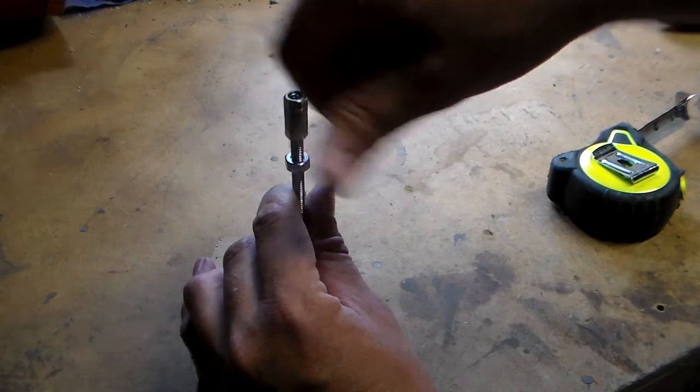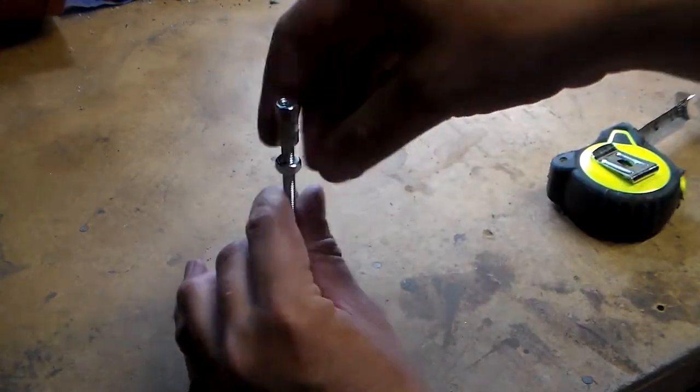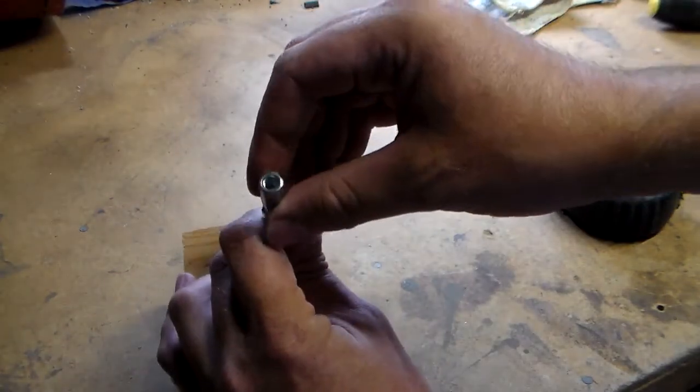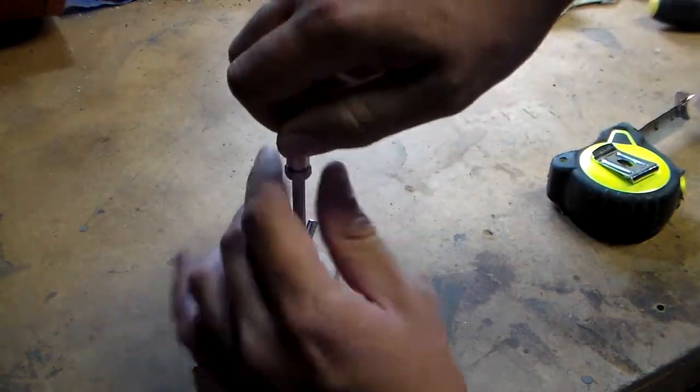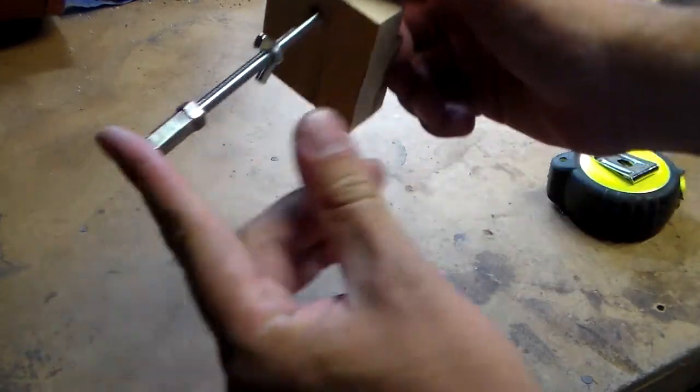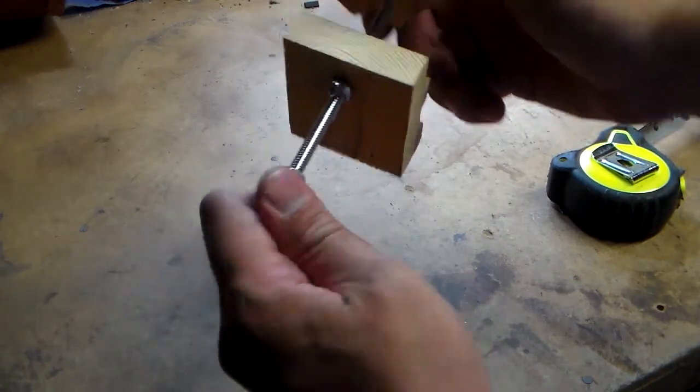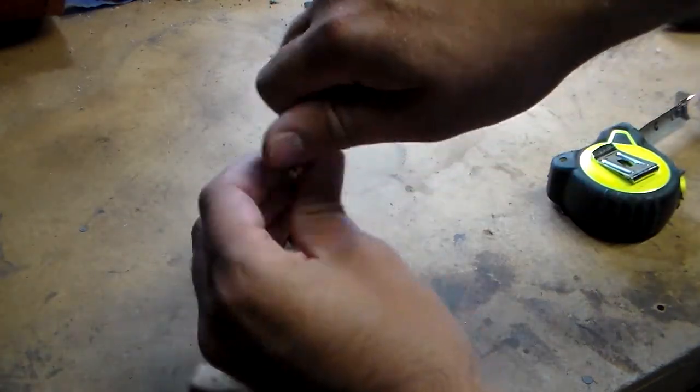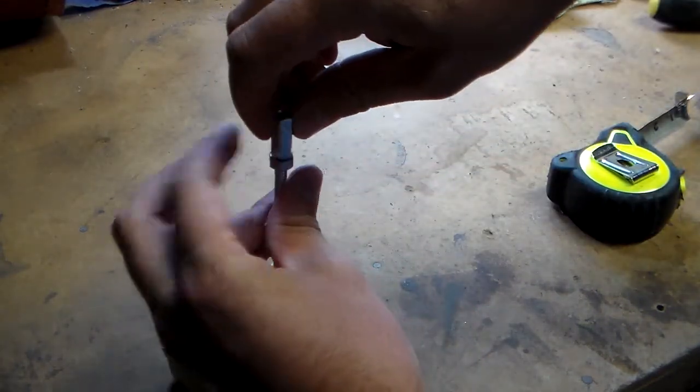I should also note at this point, the second nut is possibly unnecessary. I chose to use it as a lock nut to make sure that once I set this coupler, it didn't move anymore. So you could probably get away without that if you really wanted to.